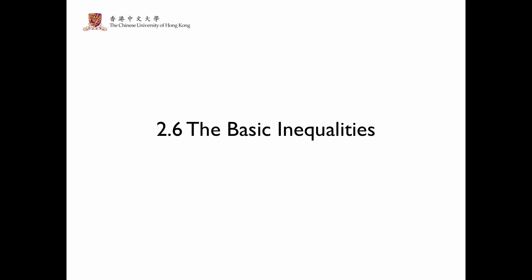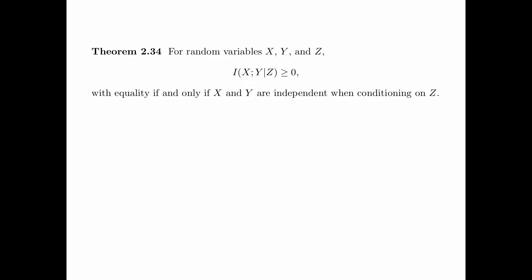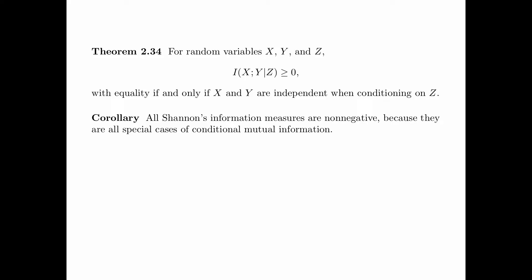Section 2.6 is about a set of very useful inequalities called the basic inequalities. It is summarized in Theorem 2.34, which says that for random variables X, Y, and Z, the mutual information between X and Y given Z is always greater than or equal to zero, with equality if and only if X and Y are independent when conditioning on Z. As a corollary, all Shannon's information measures are non-negative because they are all special cases of conditional mutual information.